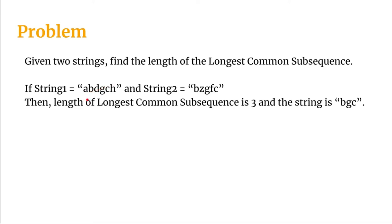Suppose we take a common subsequence of length 2: B and G. These two characters appear in both strings in the same order. B appears first in both strings, then G appears in both. It doesn't matter what characters are between them — what matters is that they are common to both strings and appear in the same order. So the length is 2 when B and G form the common subsequence.